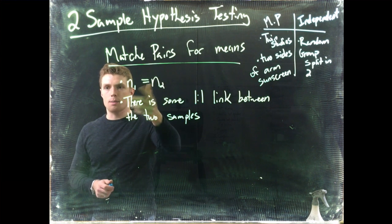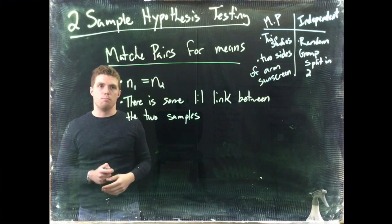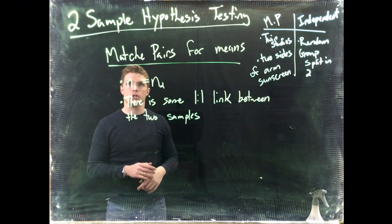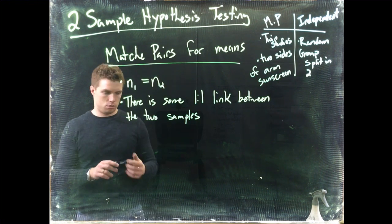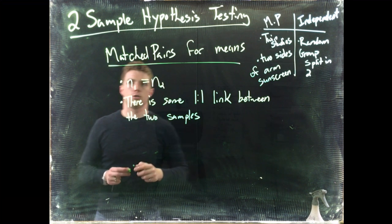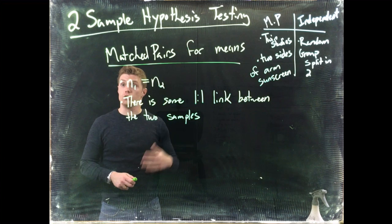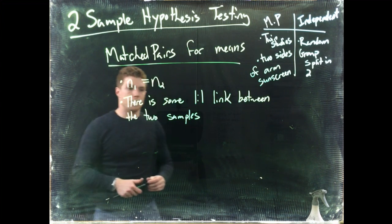But this time instead of just checking one sample size, we have to check two sample sizes. We have to check both sample one and sample two. Now in matched pairs, the sample sizes are the same, so as long as one of them is over 30, they're both going to be over 30, and then we can continue on with our matched pairs.